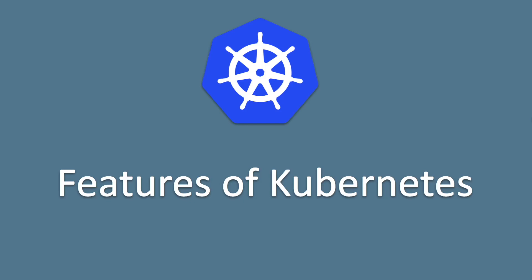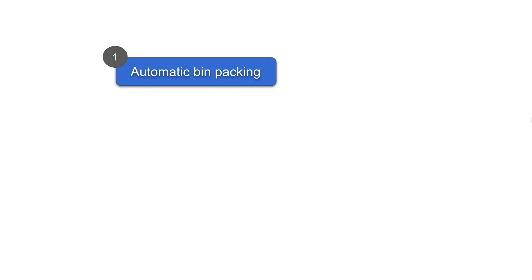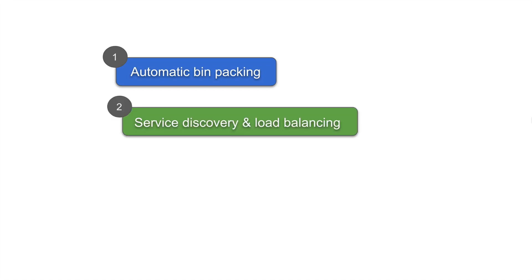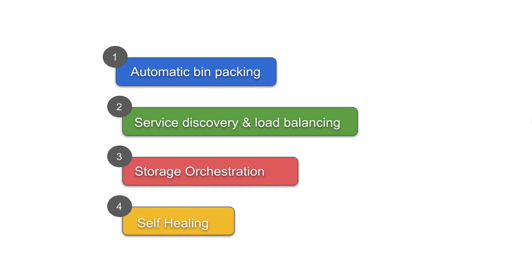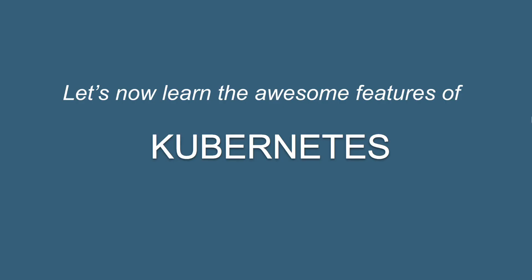Hello and welcome to part two of Features of Kubernetes. In the earlier session, we learned about automatic bin packing, service discovery and load balancing, storage orchestration, and self-healing. These are the features we covered in part one. In this session, we will cover the rest of the features of Kubernetes.